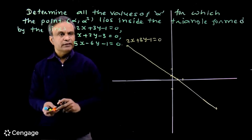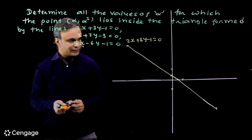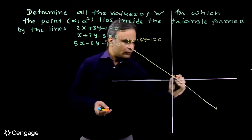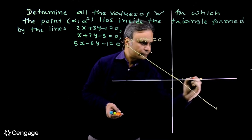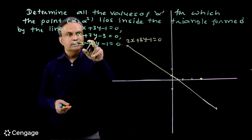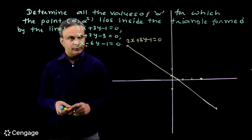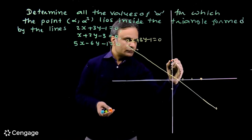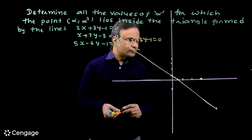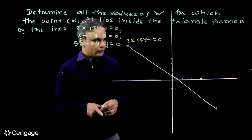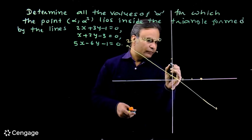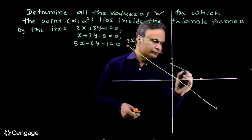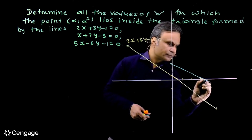Now let us draw the second line. The x-intercept is 3, and the y-intercept is 3/2, that is 1.5. The line passes through these two points. So we draw this line accordingly.